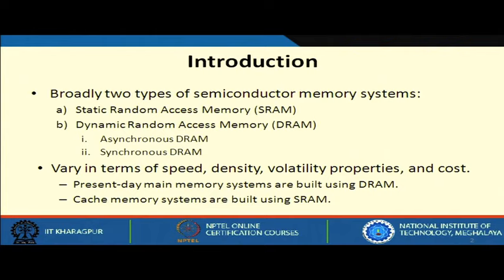Broadly, two types of semiconductor memory systems exist: static random access memory and dynamic random access memory. Under dynamic random access memory, we have two more types — one is called asynchronous DRAM and another is called synchronous DRAM.